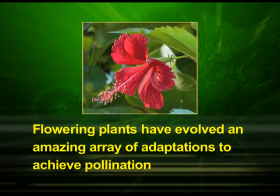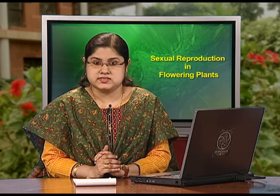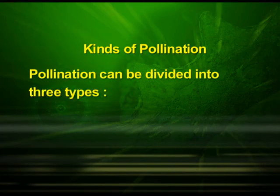Transfer of pollen grains, when they are shed from the anther to the stigma of a pistil, is termed pollination. Flowering plants have evolved an amazing array of adaptations to achieve pollination, making use of external agents. Depending on the source of pollen, pollination can be divided into three types.